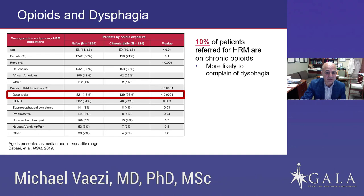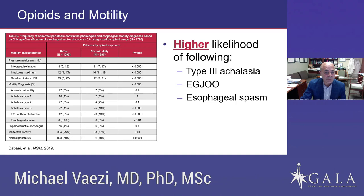When a patient comes with dysphagia and endoscopy is normal — which in most of these cases it will be — they undergo esophageal manometry. High resolution manometry shows that patients on chronic opioid use are more likely to be diagnosed with achalasia type 3, EGJ outflow obstruction, or esophageal spasm.